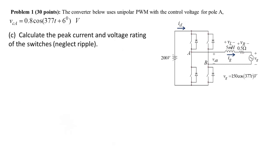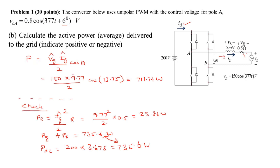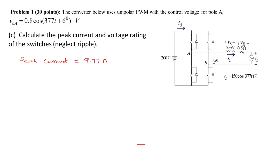Part C asks for the peak current and voltage ratings of the switches. All switches carry the inductor/grid current when conducting, so the peak current rating equals the peak grid current: 9.77 A. The voltage rating equals the DC link voltage for a two-pole converter, which is 200 volts. That concludes problem one.